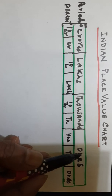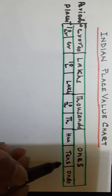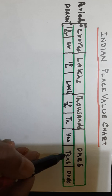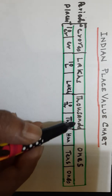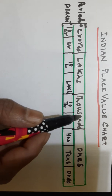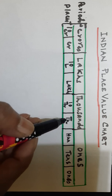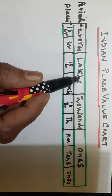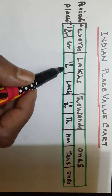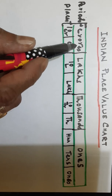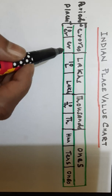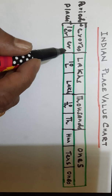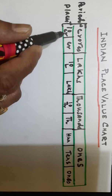The ones period has three places: ones, tens, and hundreds. Next is the thousands period, which has thousands and ten thousands — two places in the Indian system of numeration. Then the lakhs period has lakhs and ten lakhs. Similarly, crores is another period with the places crores and ten crores.